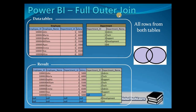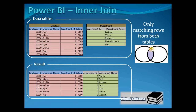Next is full outer join. In full outer join, we get all records from the left side and all records from the right side of the query. Then next is inner join. In inner join, we get only those records from both sides which meet the joining criteria. In the result, for department ID 6 from the employee query there is no matching record, and for department ID 4 and 5 from the department query no record is available, as these department IDs do not meet the joining criteria.